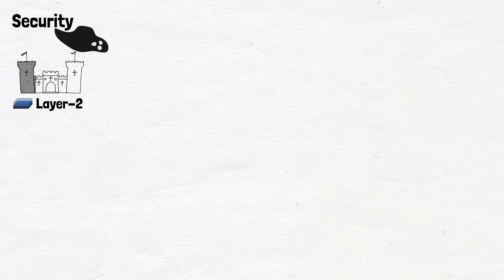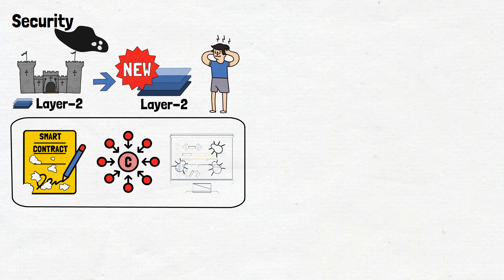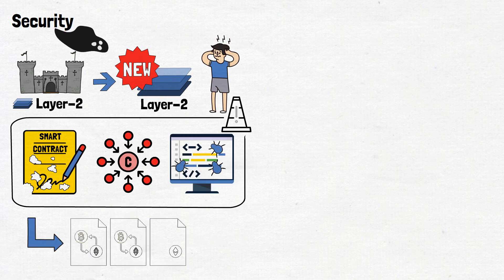Security concerns also cast a shadow. While Layer 2 solutions aim to fortify security, introducing new layers and techniques can sometimes raise concerns. Smart contract vulnerabilities, centralization risks in certain implementations, or even bugs in the code can pose security threats, potentially compromising the sanctity of transactions.